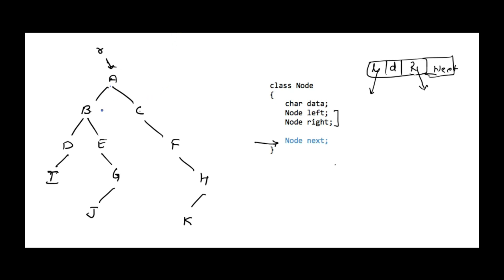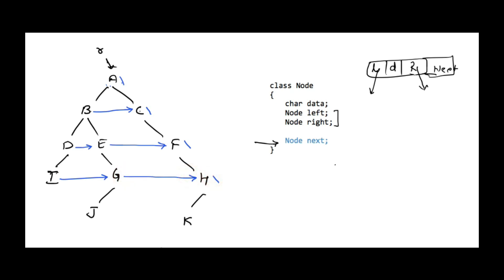What we want to do is set the next pointer of each node to the next node in that particular level. For example, the next pointer of A should be null, next of B should hold the address of C, next of C should be null, next of D should hold the address of E, next of E should hold the address of F, next of F should be null. Similarly, next of I should hold address of G, next of G should hold address of H, next of H should be null, and next of J should hold address of K and next of K should be null. So we want to connect the nodes of each level from left to right using the next pointer.